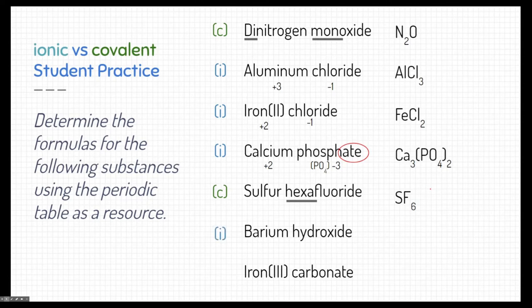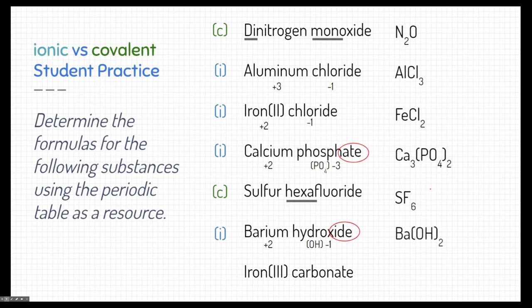Barium hydroxide is ionic — barium is a metal with a positive charge. Hydroxide is a bit unusual because there's no element called hydroxide on the periodic table. It sounds like hydrogen and oxygen put together, so this is actually a polyatomic ion. Even though it ends in '-ide,' OH is hydroxide and has a charge of minus 1. Barium is plus 2, so the formula is Ba(OH)2. Iron 3 carbonate: iron is a metal and carbonate is a polyatomic ion, so based on their charges the formula is Fe2(CO3)3.